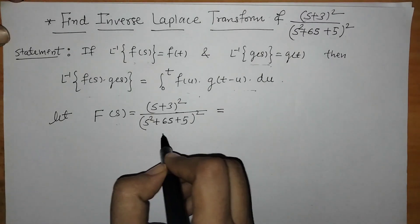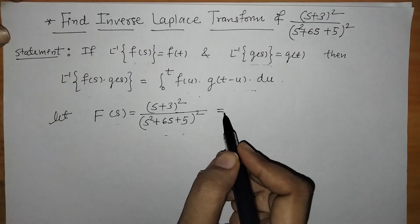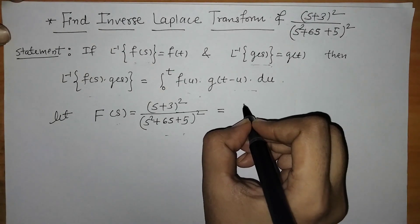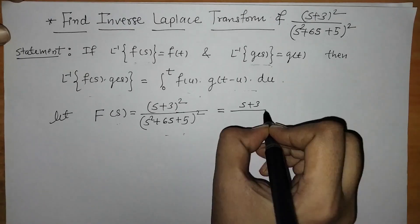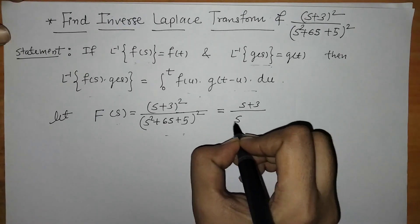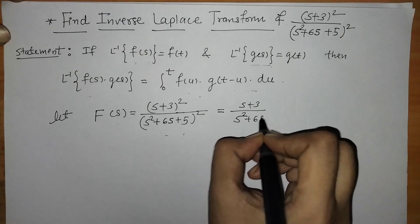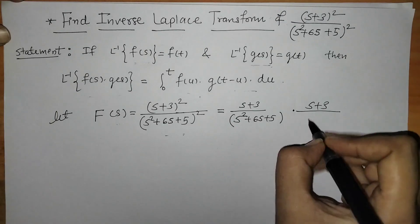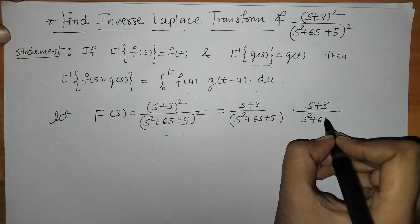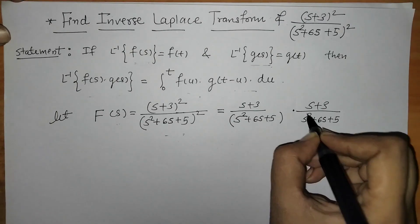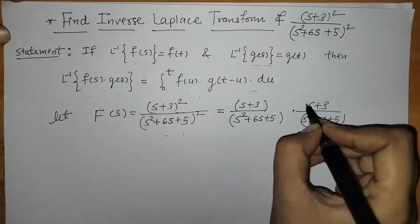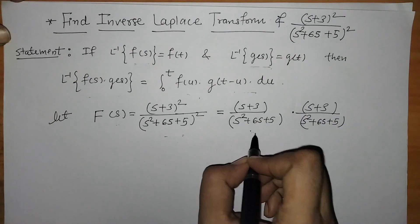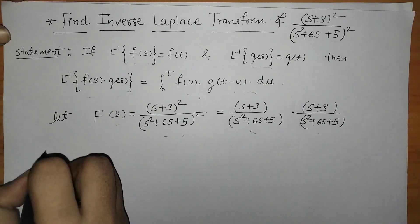Now, we have to write down the given function F(s) into functions such that we can find their inverse Laplace easily. We write this as (s + 3)/(s² + 6s + 5) times (s + 3)/(s² + 6s + 5). Let us consider the first function as f(s) and this as g(s).